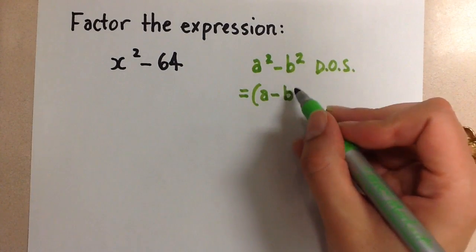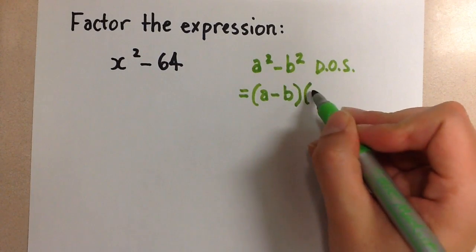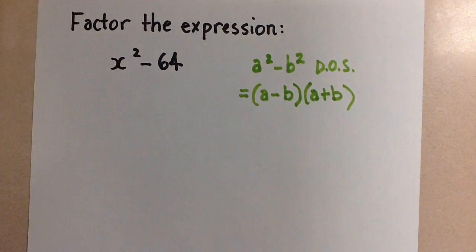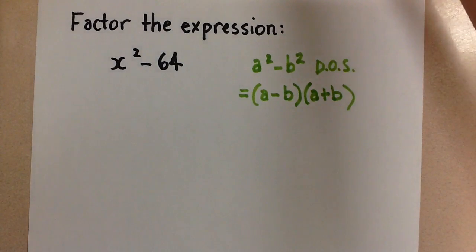minus the square root of b squared, which is b, and then a plus b. So this will always be the format for factoring a difference of squares.